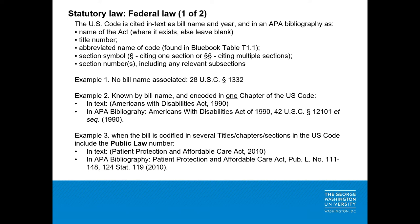Our first example is a section of the US code that has no bill name associated with it, so you just give the title and section numbers. Our second example is the Americans with Disabilities Act of 1990, which was enacted into the US code in chapter 126 of Title 42, which deals with public health. Our third example is when a bill is enacted into more than one title number or chapter in the US code, then you should include the public law number. For example, the Patient Protection and Affordable Care Act of 2010 includes public law number 111-148 and was published in volume 124 of the United States Statutes at Large beginning on page 119 in the year 2010.